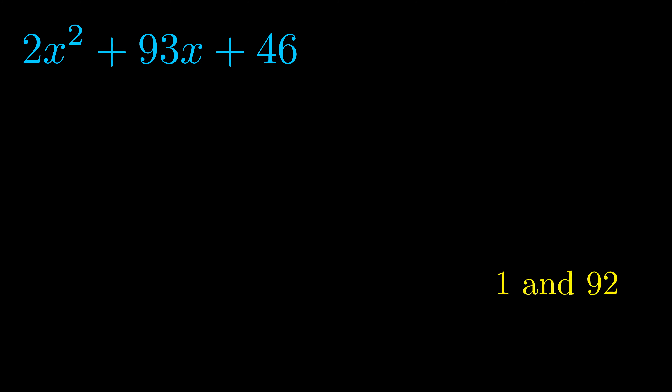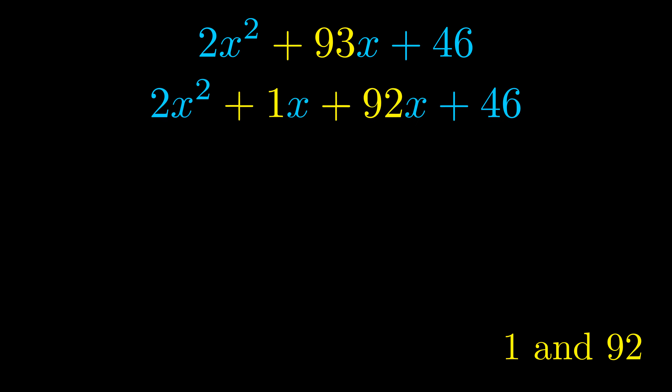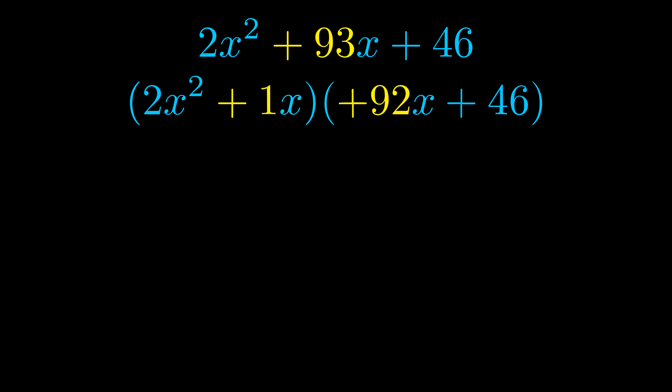Okay, here's what I came up with. Once you have these factor pairs, the goal is to find which of these pairs adds to the b value. The b value is the coefficient on the x term — that's the middle term, the one that we haven't done anything with yet.